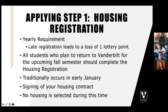Step one is applying for housing via housing registration. This is a yearly requirement, already completed this year between April 1st and 5th. Late registration results in the loss of one lottery point. All students planning to return should complete housing registration, which typically occurs in January when you sign your housing contract. No housing is selected at this time — you are simply telling us you plan to return and will need some type of housing, whether on campus, in a Greek house, or possibly off campus.